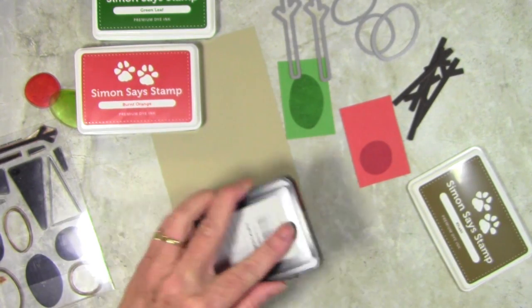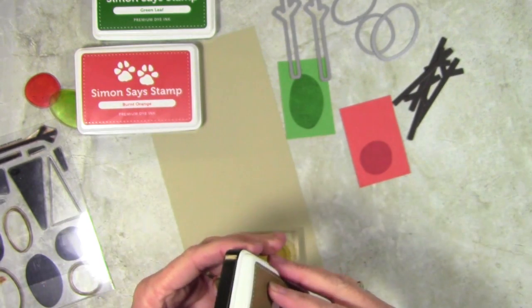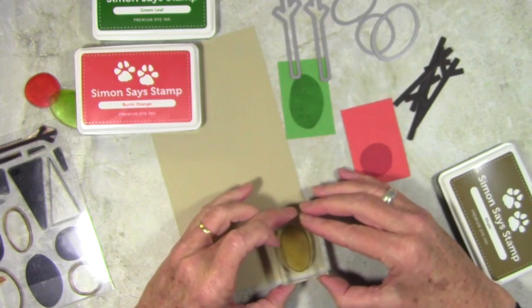Again, I'll just pat my ink pad right onto the stamp, making sure that I get that well covered. Once I'm ready, I can go ahead and cap off my ink and stamp onto my card stock.